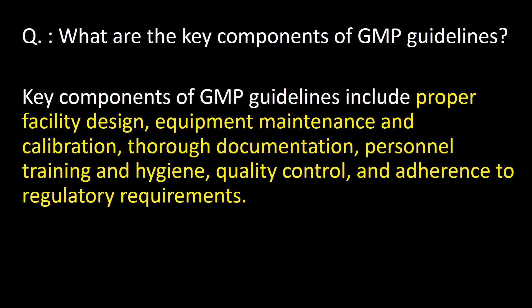What are the key components of GMP guidelines? Key components of GMP guidelines include proper facility design, equipment maintenance and calibration, thorough documentation, personnel training and hygiene, quality control, and adherence to regulatory requirements.